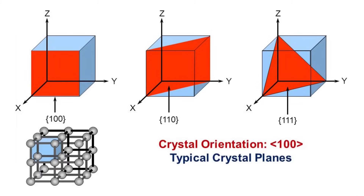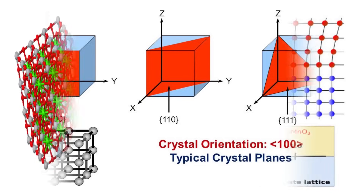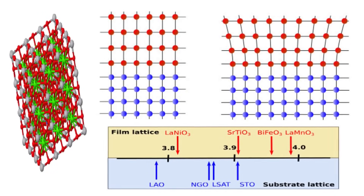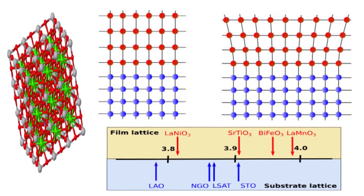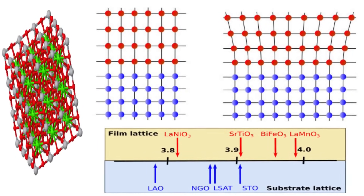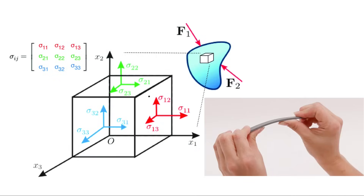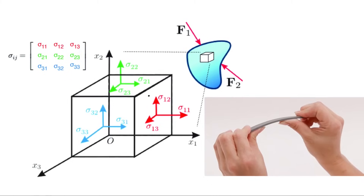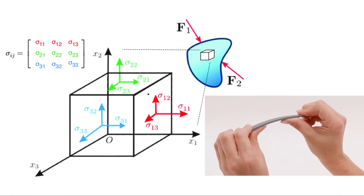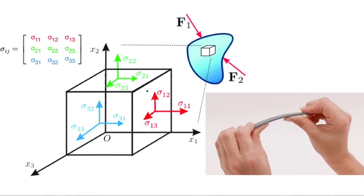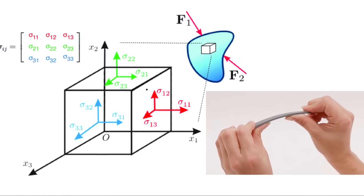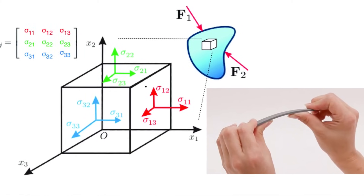By selecting different substrate cuts, we can control the strain state. Additionally, by adjusting the film thickness, we regulate the relaxation process. The main challenge is that once a film is made, its strain cannot be altered. This makes it difficult to study and isolate the strain effect from other contributing factors.